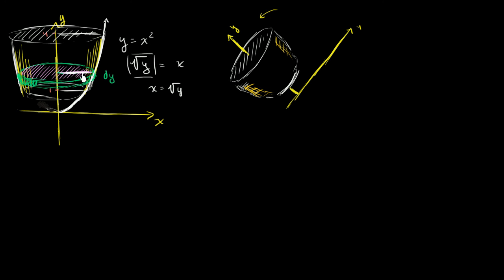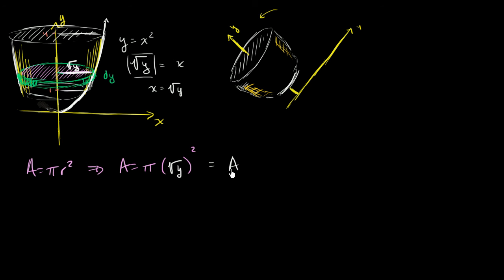Our radius is going to be the square root of y — we can call it g of y. So the area equals pi r squared, which means the area is pi times the square root of y squared, which is just pi times y. If we want the volume of the disk, we multiply the area by the depth dy. So the volume of each disk is pi·y·dy.